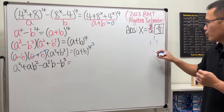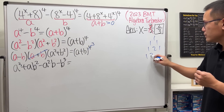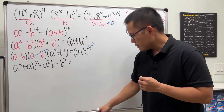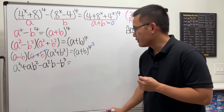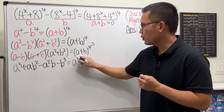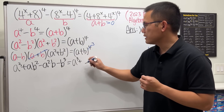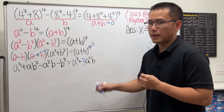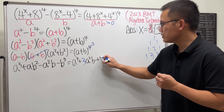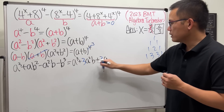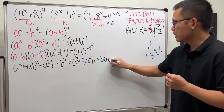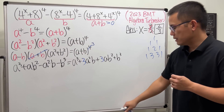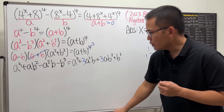On the right-hand side, let's expand a plus b to the third power using Pascal's triangle — coefficients 1, 3, 3, 1. So we get a cubed plus 3a squared·b plus 3a·b squared plus b cubed.